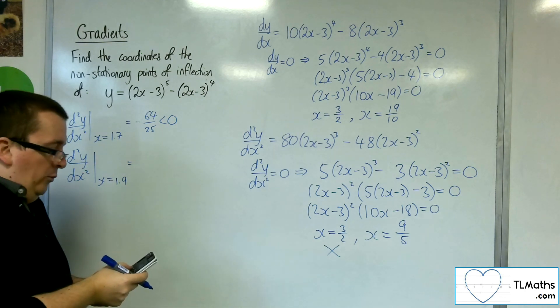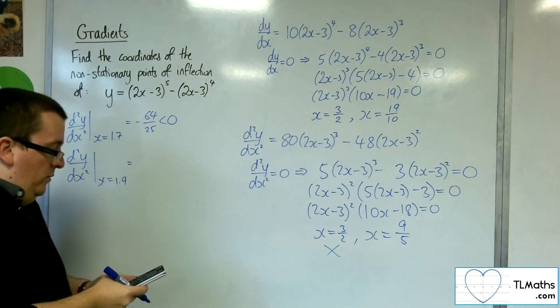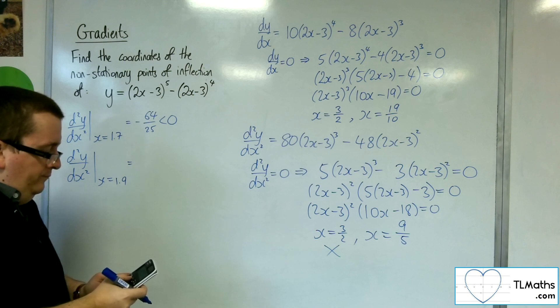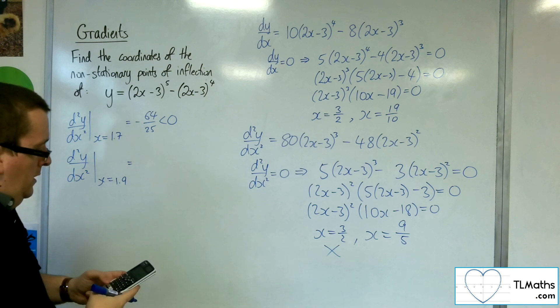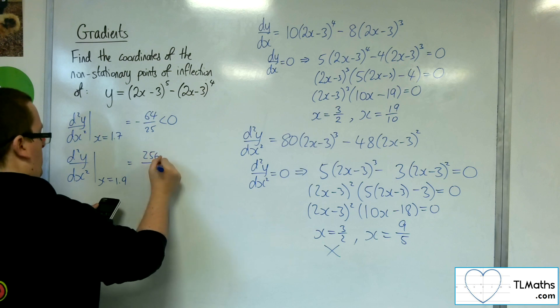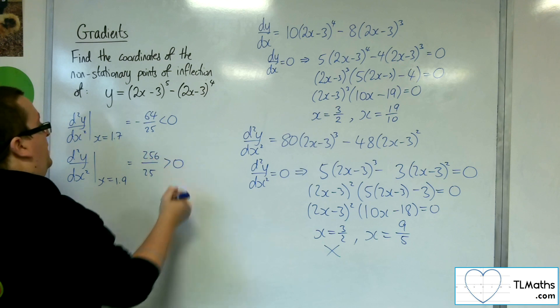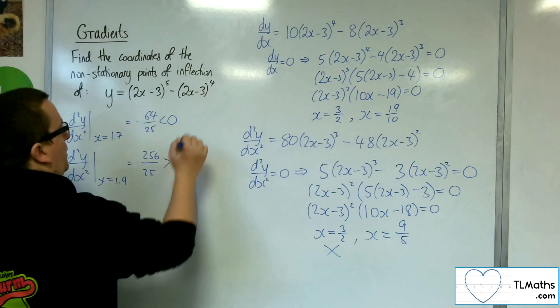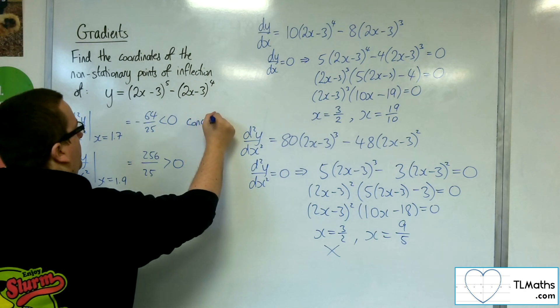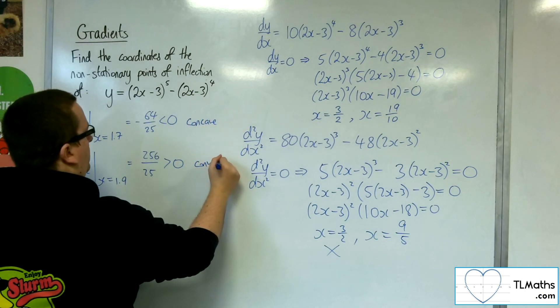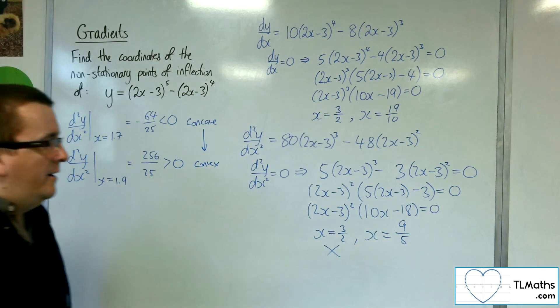Now I need to substitute in positive 1.9, and we get 256 over 25, so that's positive. So we're going from negative to positive, so concave to convex, and so we definitely have that change in sign.